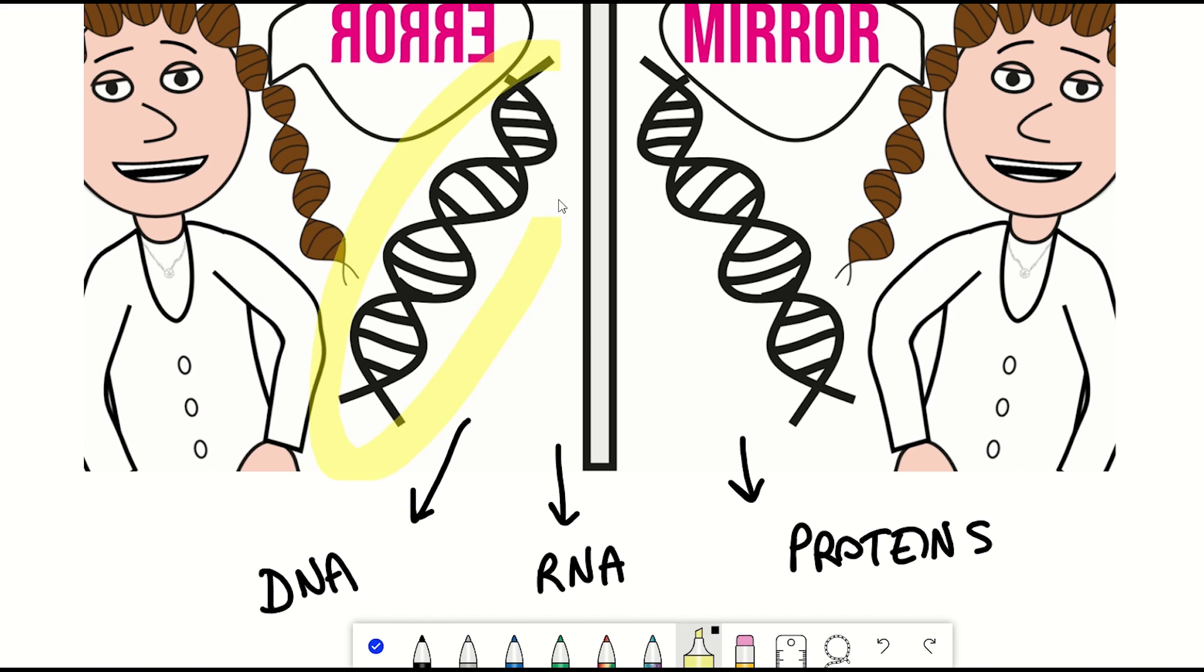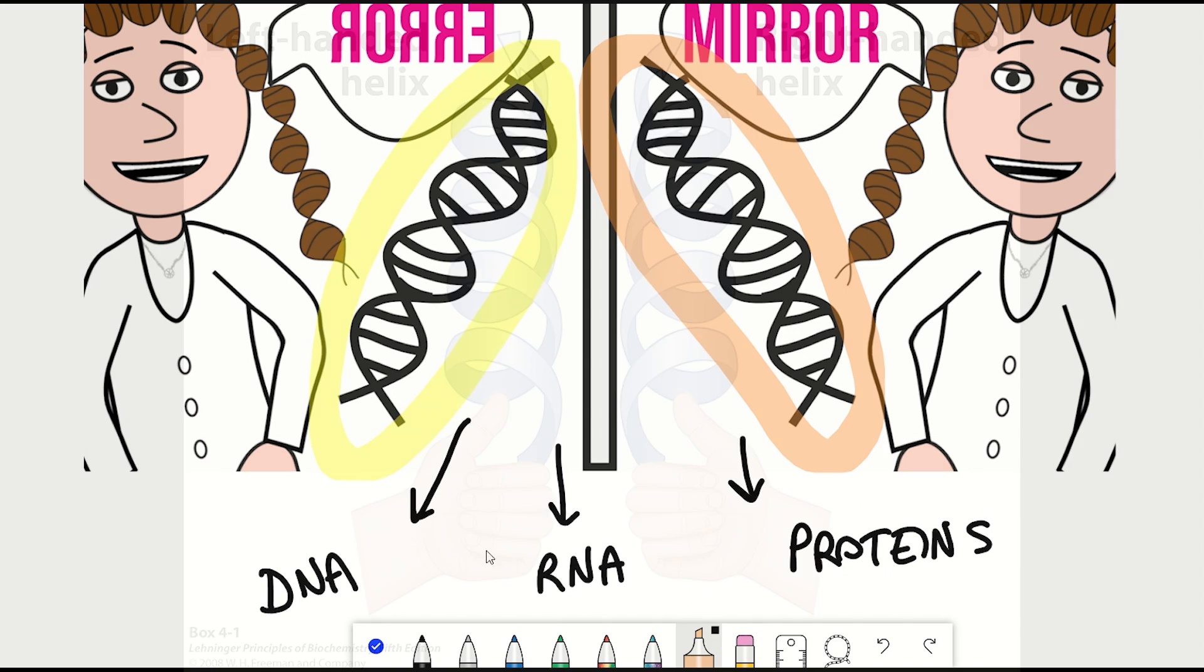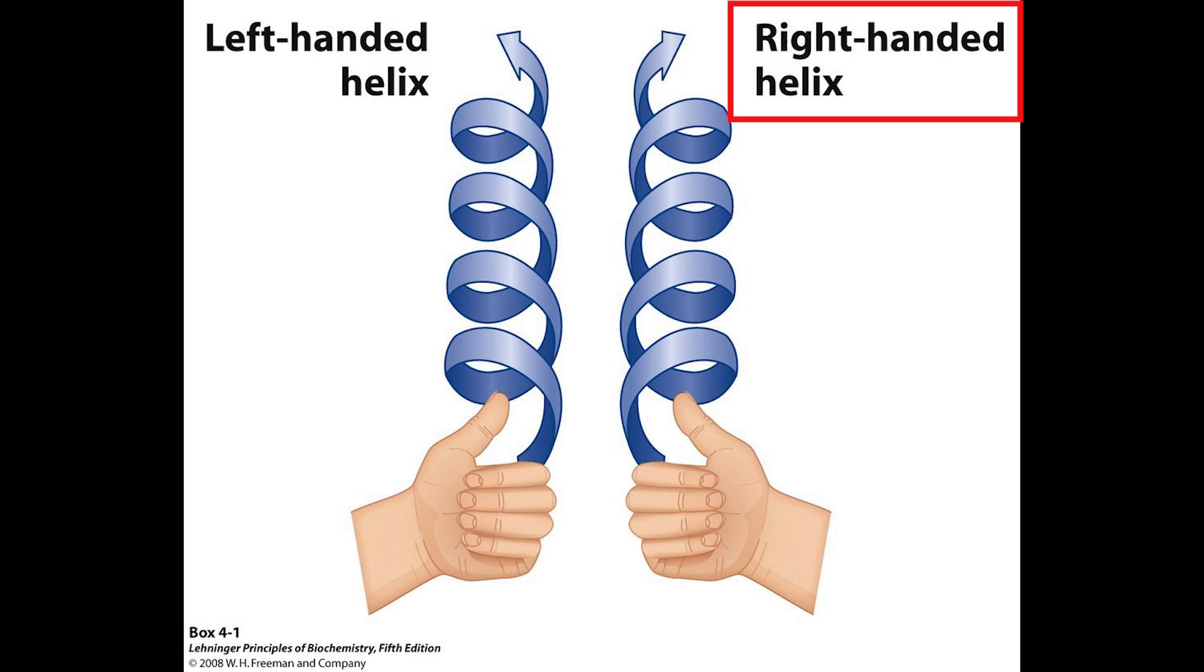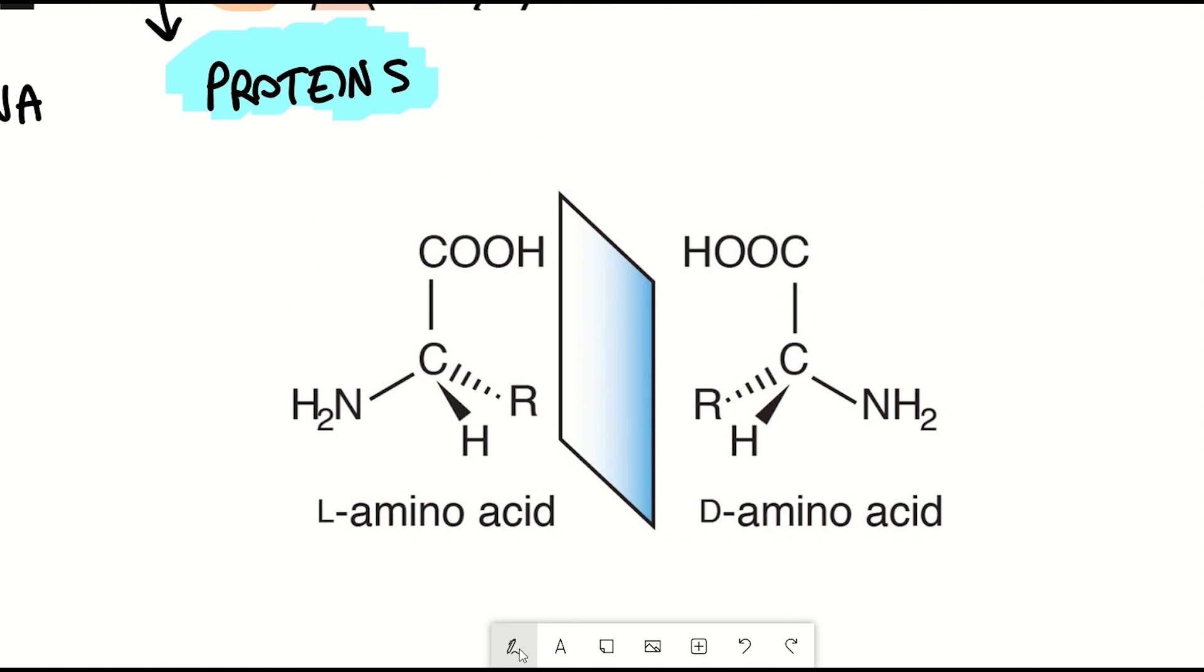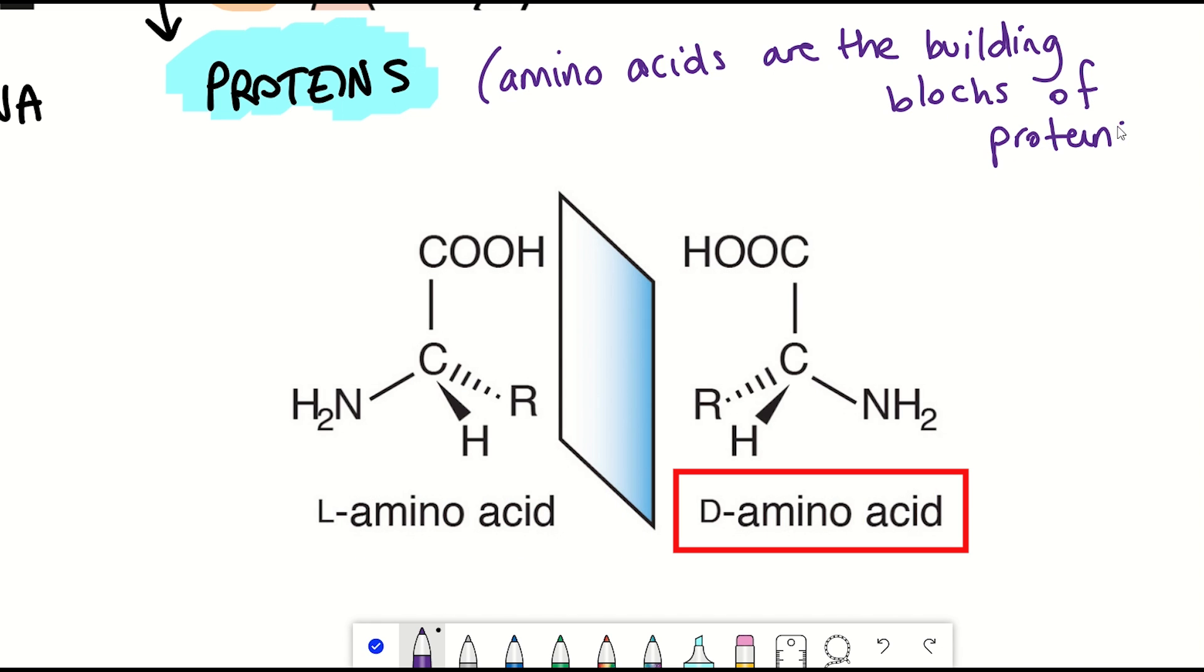DNA twists one way around, not the other. It's a right-handed helix, not a left-handed helix, and proteins follow a similar handedness. There are so-called L-amino acids that make up proteins, not D-amino acids, with L and D amino acids being mirror images of themselves.